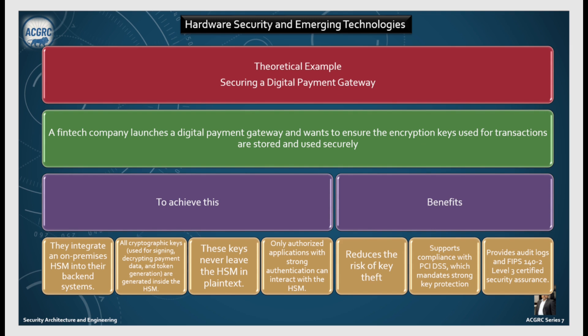For example, a fintech company launches a digital payment gateway and wants to ensure that encryption keys used for transactions are stored and used securely. To achieve this, they integrate an on-premises HSM into their back-end system. All cryptographic keys used for signing, decrypting payments, data and token generation are generated inside the HSM. These keys never leave the HSM in plain text, and only authorized applications with strong authentication can interact with the HSM. Benefits include reduced risk of key theft, support for PCI DSS compliance, and FIPS 140-2 Level 3 certified assurance with audit logs.